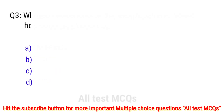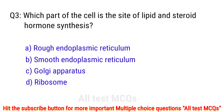Question number 3. Which part of the cell is the site of lipid and steroid hormone synthesis? The right answer is option B: smooth endoplasmic reticulum.